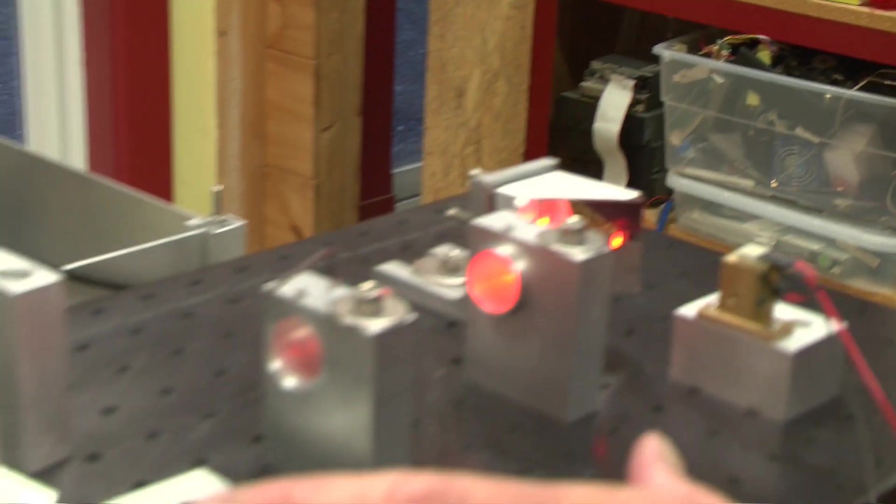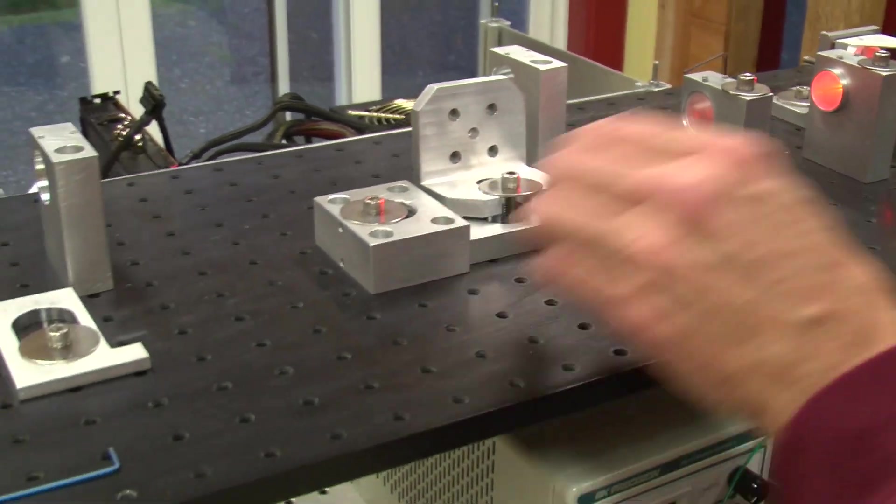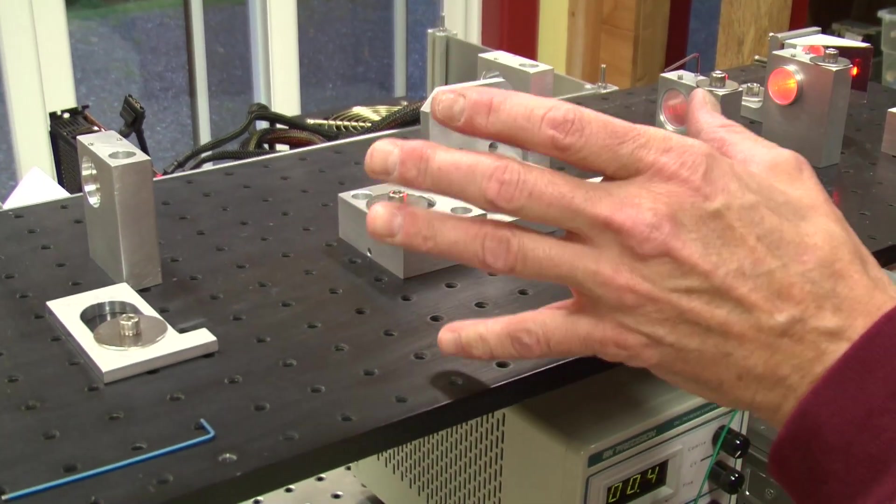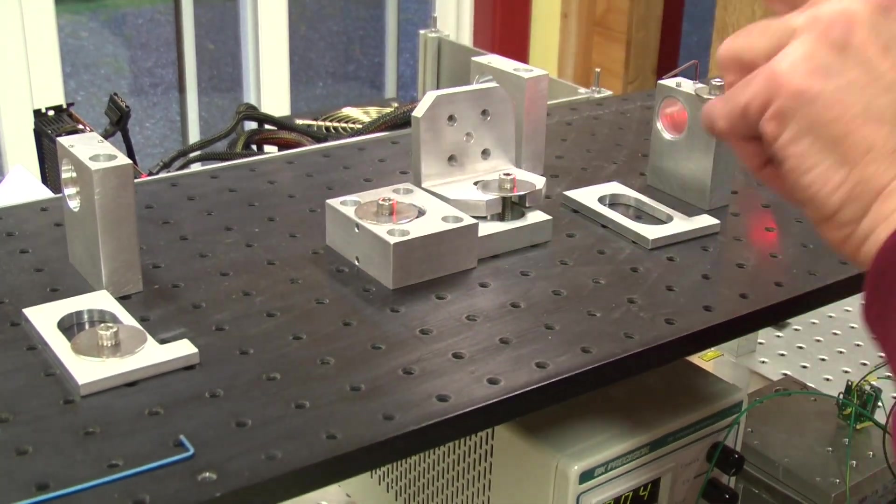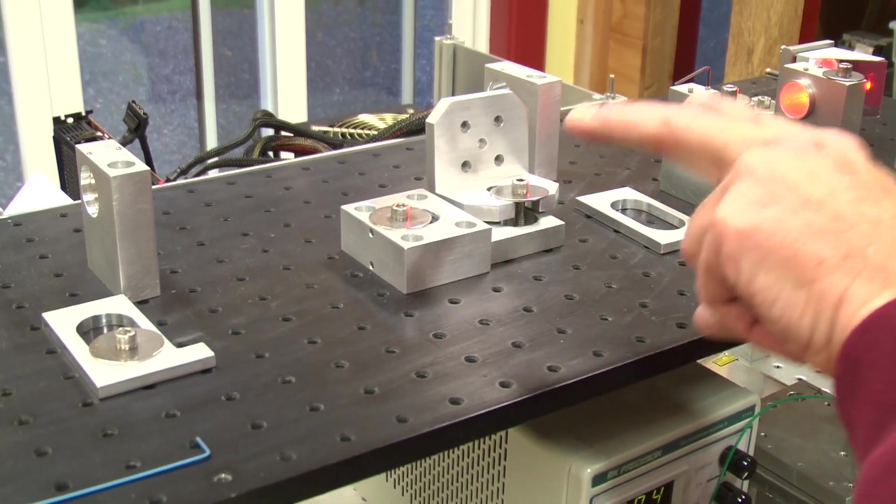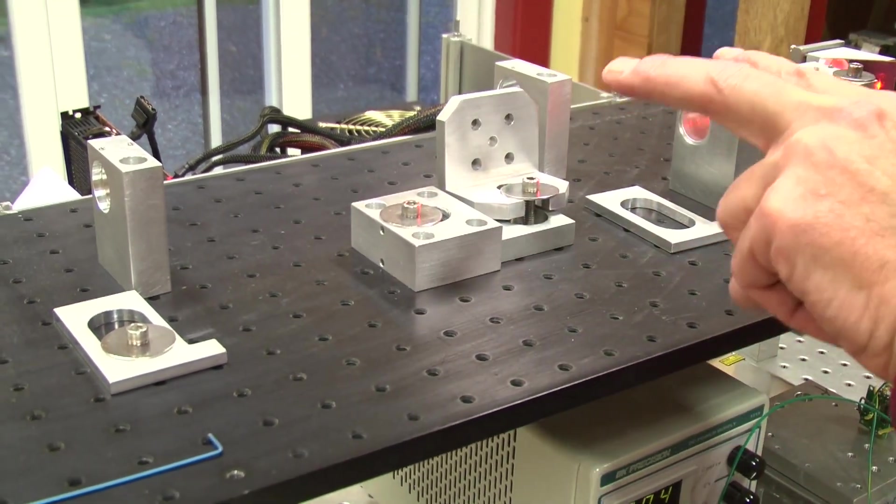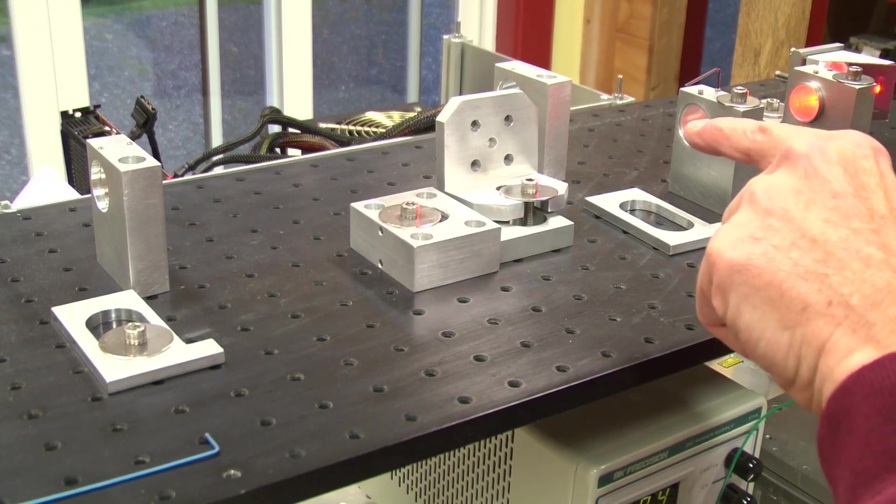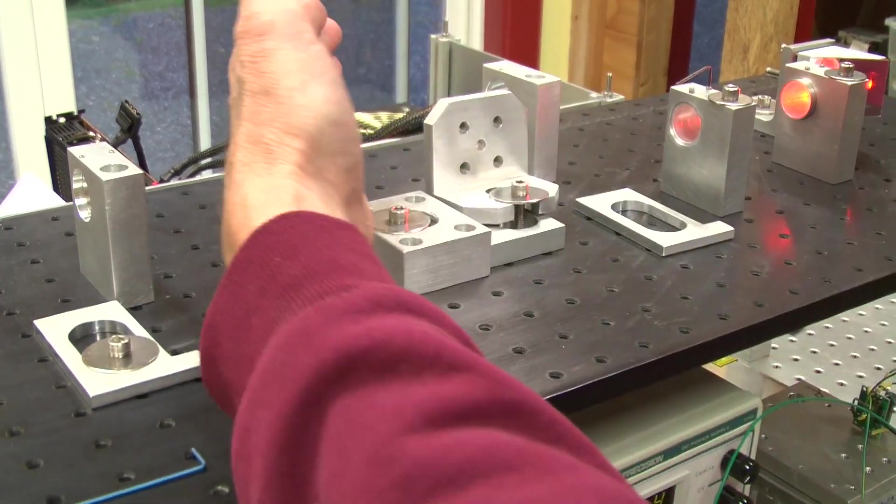Now, the spatial filter is an added beam component. It adds length to the projector, and that's a downside. But it has two major benefits that you get from the same set of optics, and that's why I always use it.